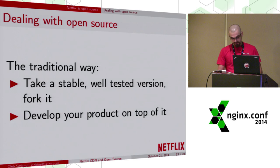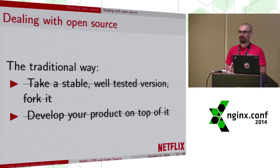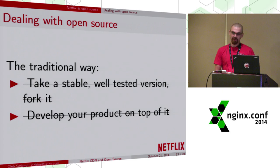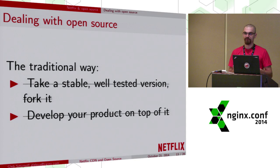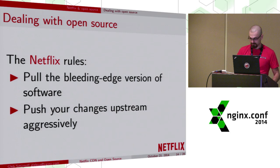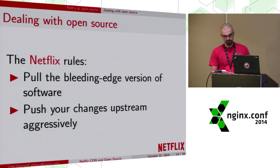You develop your code without any interaction with the community, without wasting time for people who don't accept your patches and so on — and this saves a lot of time. You don't need to synchronize with what they code, or get your changes included upstream. But does it work in the long term? At Netflix, we think no, it doesn't work in the long term. Many Open Connect team members came from different companies that managed their software exactly this way, and we all independently learned that this is the wrong way to do things. This is the Netflix way — the opposite: we pull the bleeding-edge version of software and constantly push our changes back.